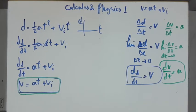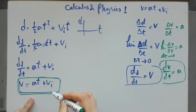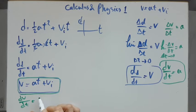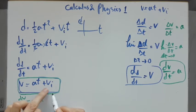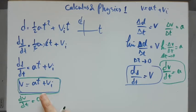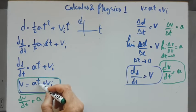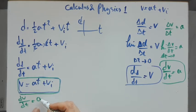Let's find that for our familiar formula. The derivative of V = AT + VI is simply A — the VI term is zero because it's a constant, and AT differentiates to just A. So the derivative of velocity gives you the acceleration.